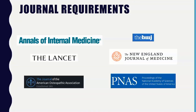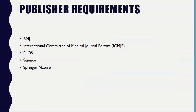Moving on to journal requirements. Some journals that have requirements include the Annals of Internal Medicine, which wants you to provide access to original study data or statistical code. The Lancet encourages authors to share any data, preferably translated into English, for others to use. The New England Journal of Medicine has one as well. For publishers as a whole, all of BMJ requires a data sharing statement for all research papers — they don't require that you share it, but they strongly suggest it.